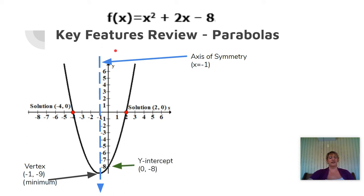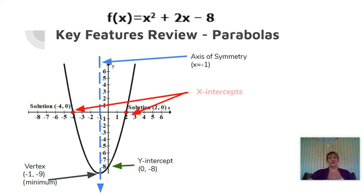We also have a y-intercept — that's the point where it's crossing the y-axis. You can see it's crossing the y-axis where y equals negative 8, and x always equals 0 where it's crossing the y-axis, so it has the point 0, negative 8. And then the really important key features that are going to matter to us today are the x-intercepts. In this case we have negative 4, 0 and 2, 0.